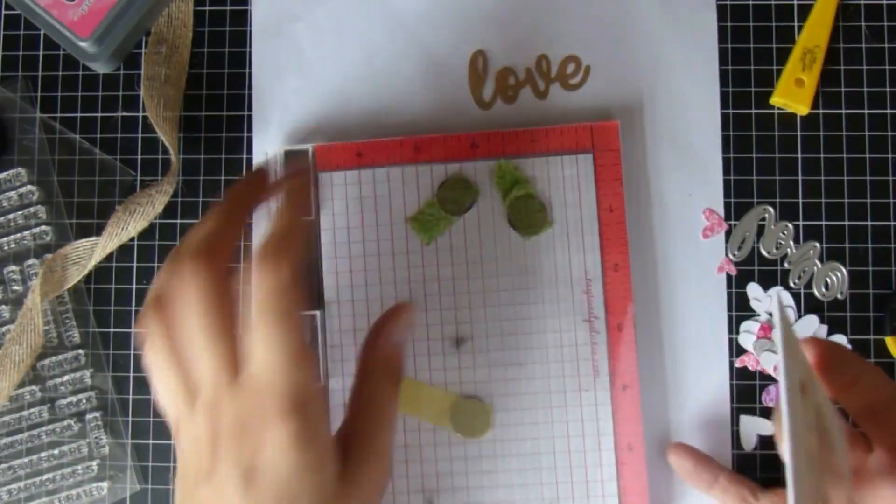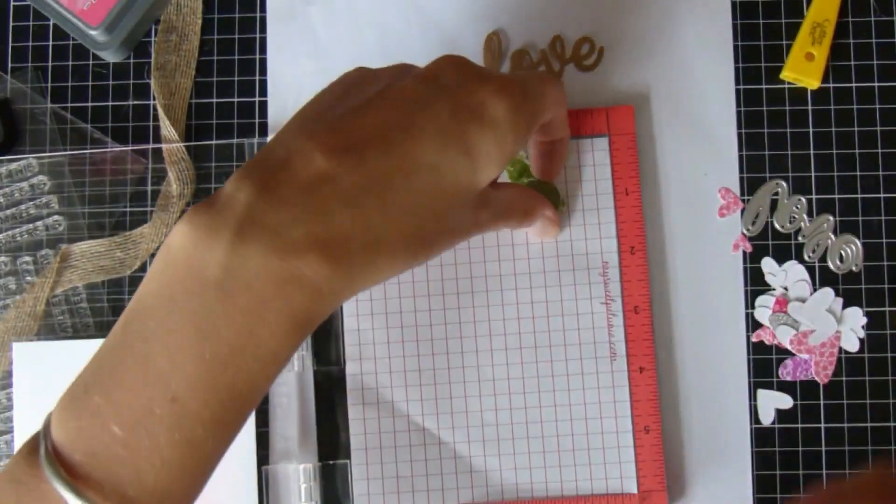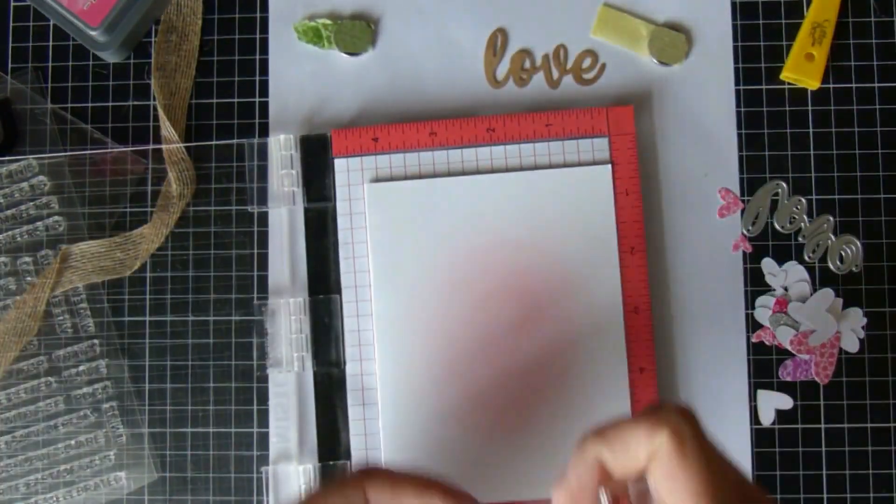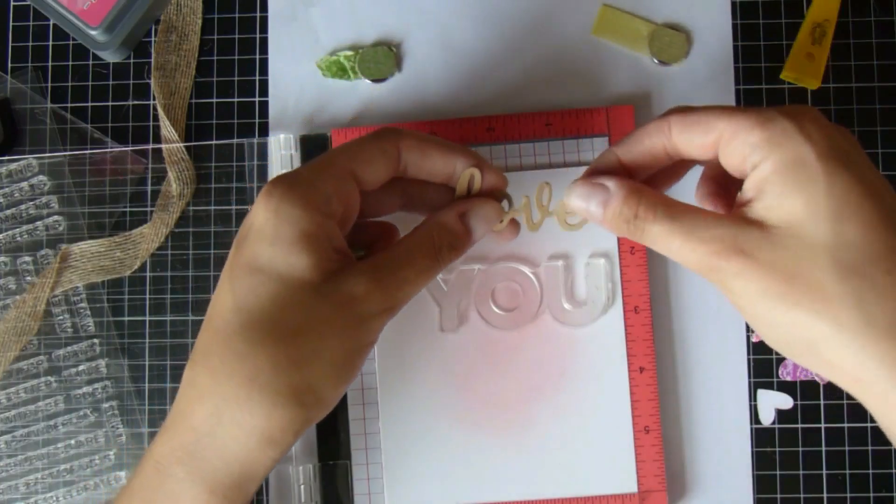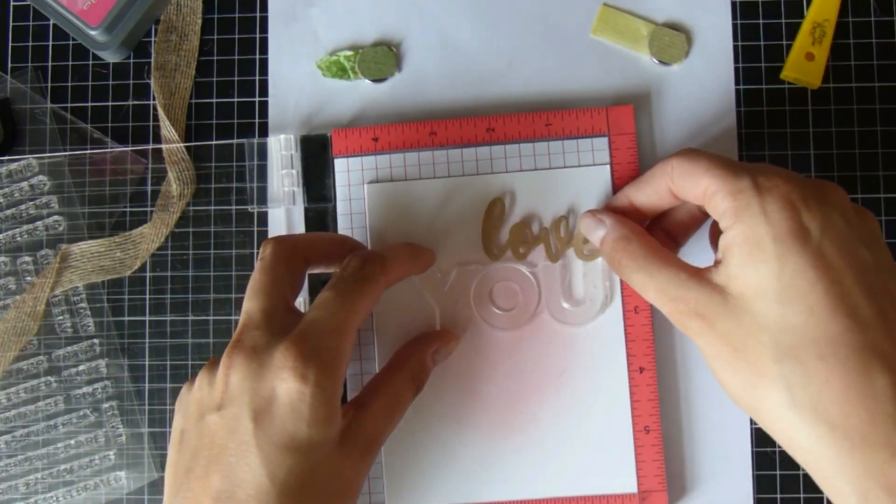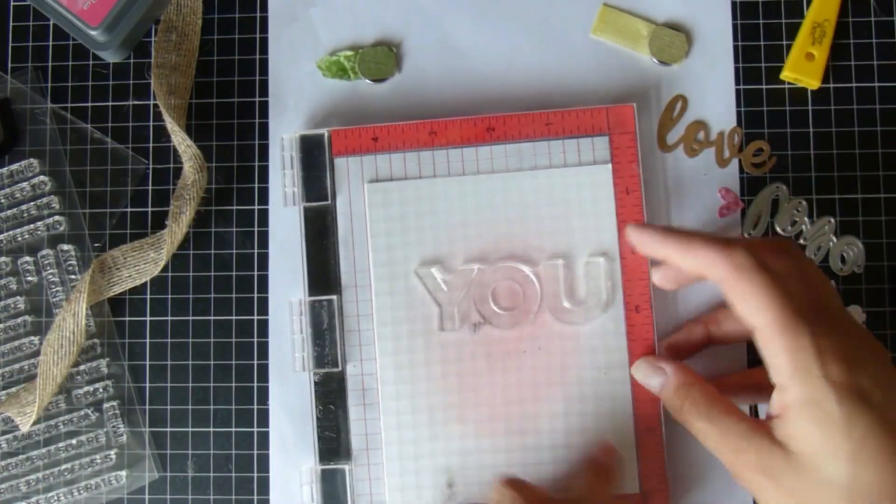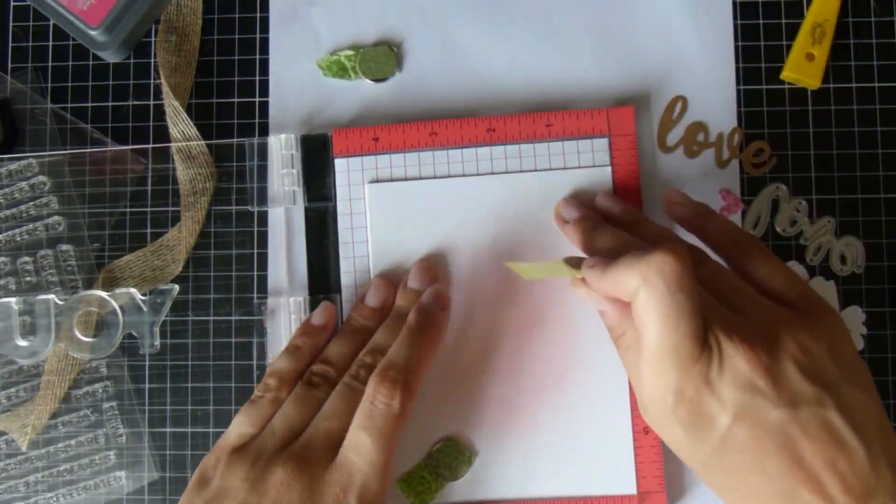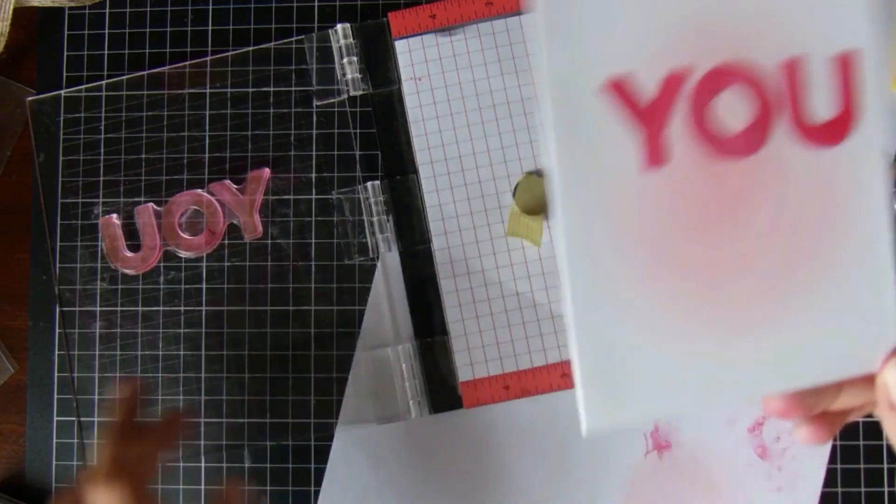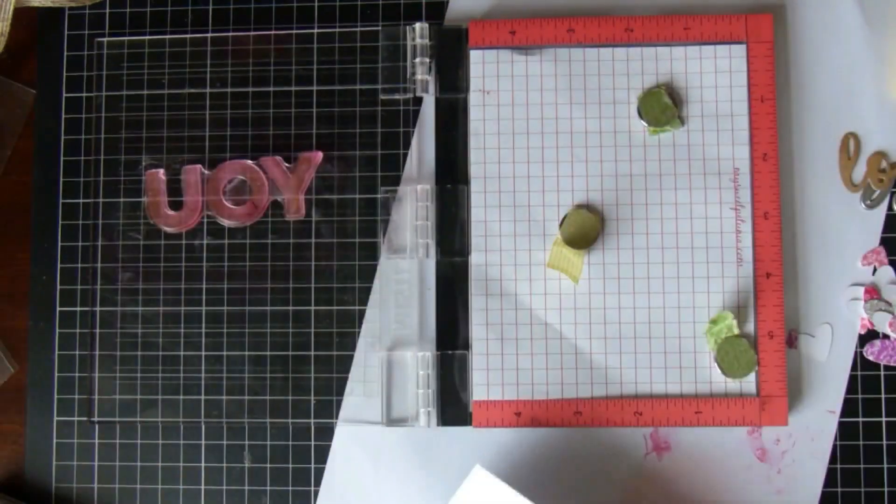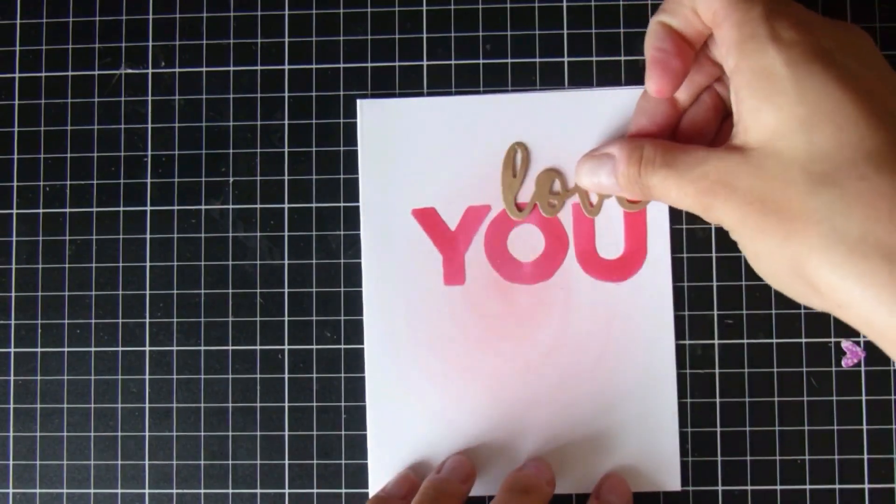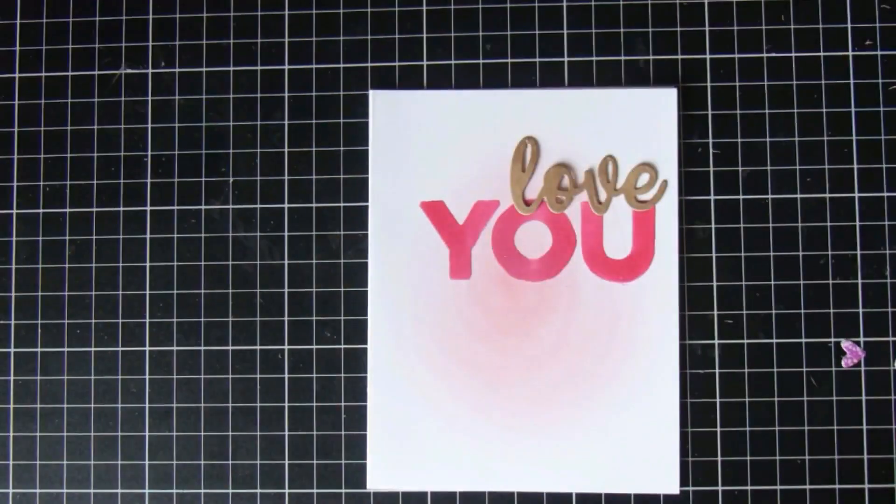I'm using my MISTI to put this big 'U' stamp, this nice big bold 'U' stamp. And the ink that I ended up using is called Plastic Flamingo from Lawn Fawn—it's a nice bright pink ink. So now I'm just putting it all together. It's a nice kind of quick and simple fun card.